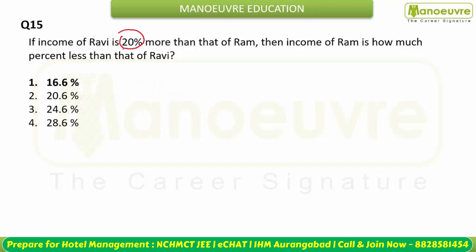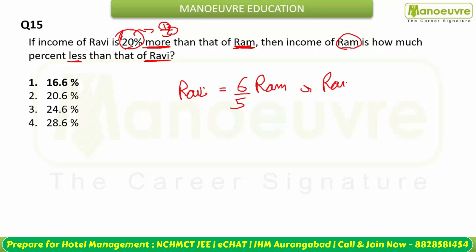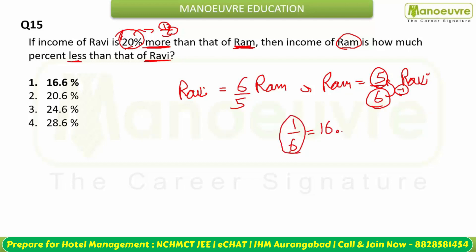Ravi's income is 20% more than Ram's. Using fractions: 20% = 1/5, so Ravi = 6/5 of Ram, meaning Ram = 5/6 of Ravi. From 6, Ram is 1 less: 1/6 fraction less = 16.67% less. So Ram's income is approximately 16.6% less than Ravi's. Option one is correct.